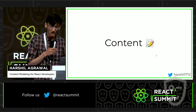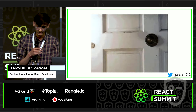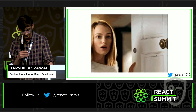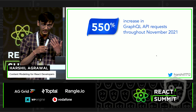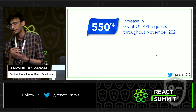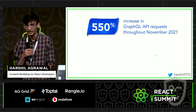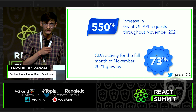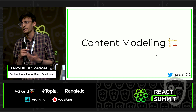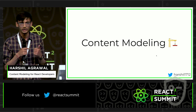Today I'm going to talk about content, because in the past two years the amount of content we have generated is massive. Everyone out there has created content in some form or another. In November last year, during the Black Friday sale, we saw a massive increase in the API requests at Contentful APIs. The GraphQL API requests increased by 550%, while the Content Delivery API, or CDA, increased by 73%. As a developer, I believe it is on us to make sure that we provide that amazing experience, not just to our users, but to our team.